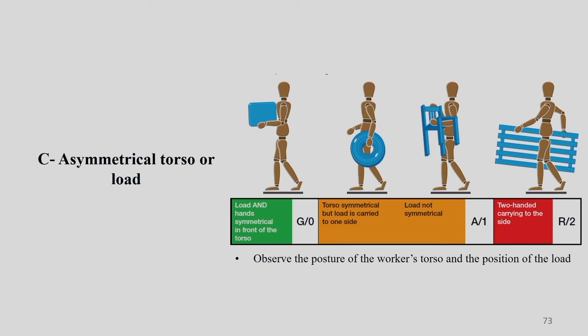Moving to Factor C — asymmetrical torso or load. If the load and hands are symmetrically in front of the torso, the load is not to the left or right side but aligned with the body midline, then the color is green and the value is 0.